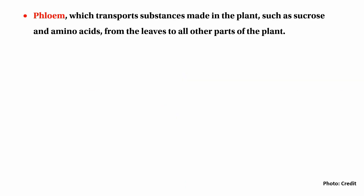Phloem transports substances made in the plant through the process of photosynthesis. It transports from leaf to the storage organ in the downward direction, and from the storage organ to the growing region. Phloem can move in both the upward and downward direction at the same time.